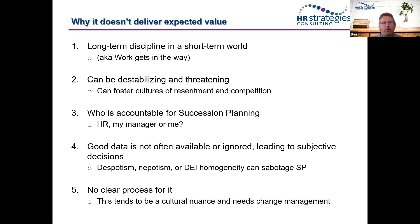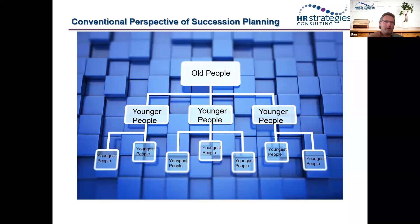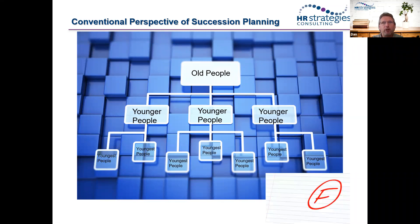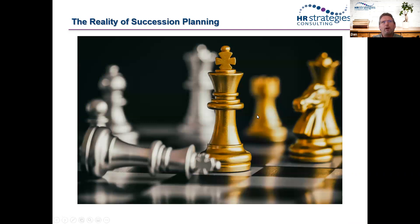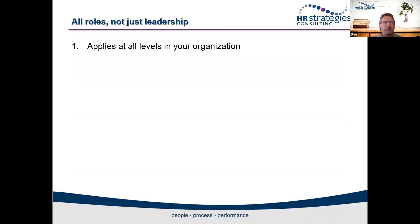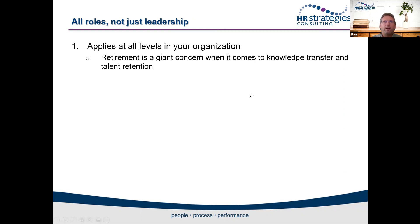The conventional view of succession planning — older people being replaced by younger people, who are eventually replaced by the youngest — is outdated. The more realistic view is that it's a chess game: different positions with different values, moving at different paces in different directions, that need to be coordinated strategically. It needs to apply to all levels of the organization. While retirement is the biggest concern historically, succession planning must also come with knowledge transfer and talent retention.